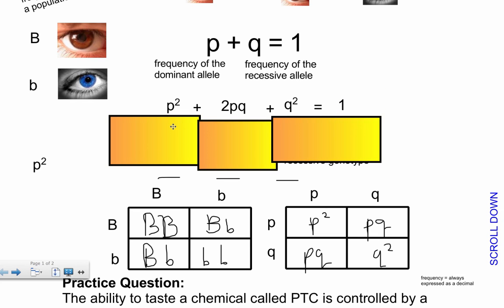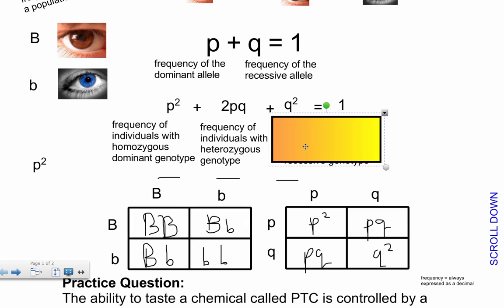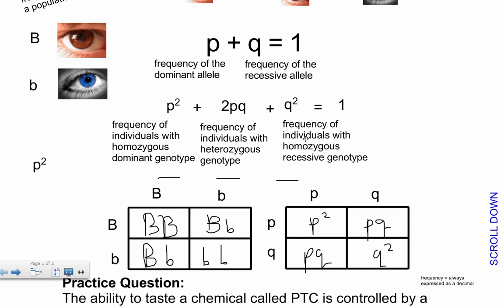And so from this, I can conclude the following, that P squared represents the frequency of individuals with a homozygous dominant genotype.